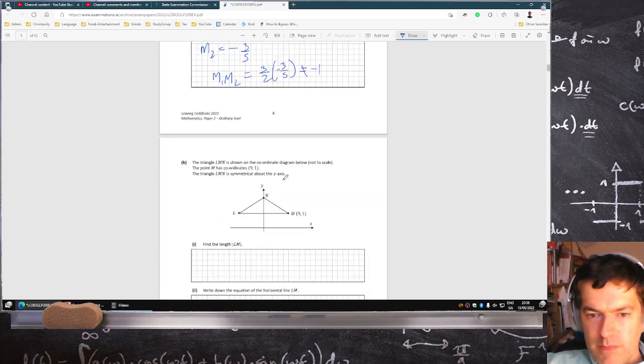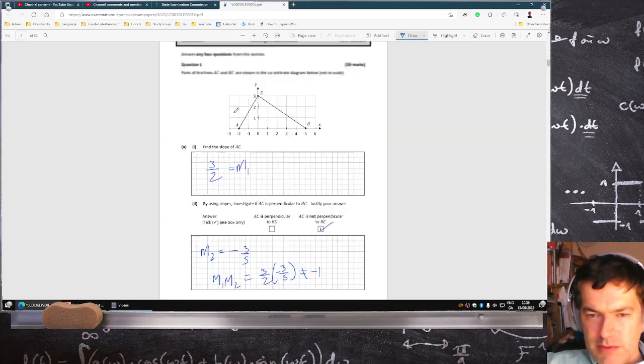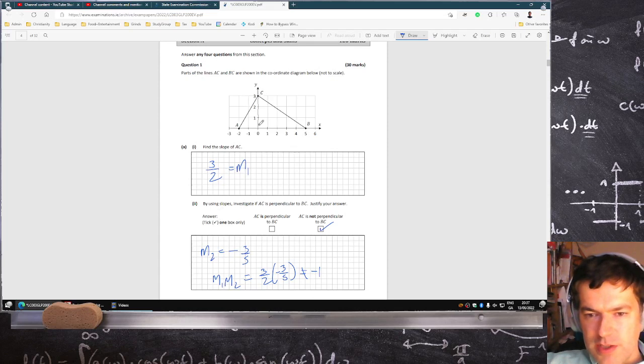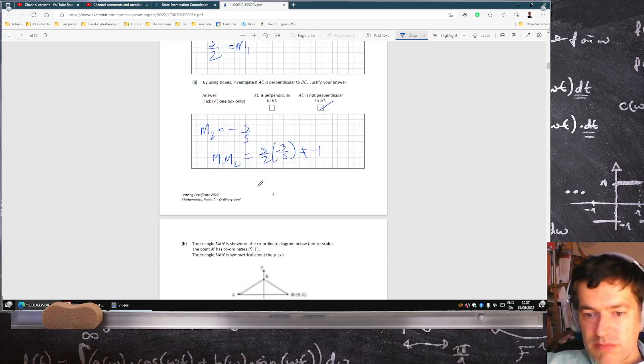Okay, I think that one's okay. So start the exam point. Slope of AC, 3 over 2. And then the slope of the other one would be minus 3 over 5. And you multiply them, you definitely don't get minus 1.